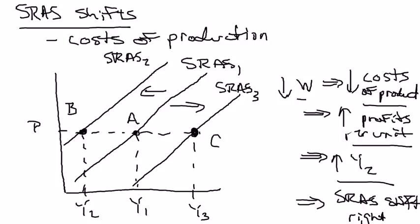Rather than a decrease in nominal wages, it could be a decrease in the price of oil. That would decrease costs of production, increase profits per unit of output, and lead firms to want to produce more, so the short-run aggregate supply curve would shift to the right in that case as well. Likewise, an increase in the price of oil would cause the short-run aggregate supply curve to shift to the left.